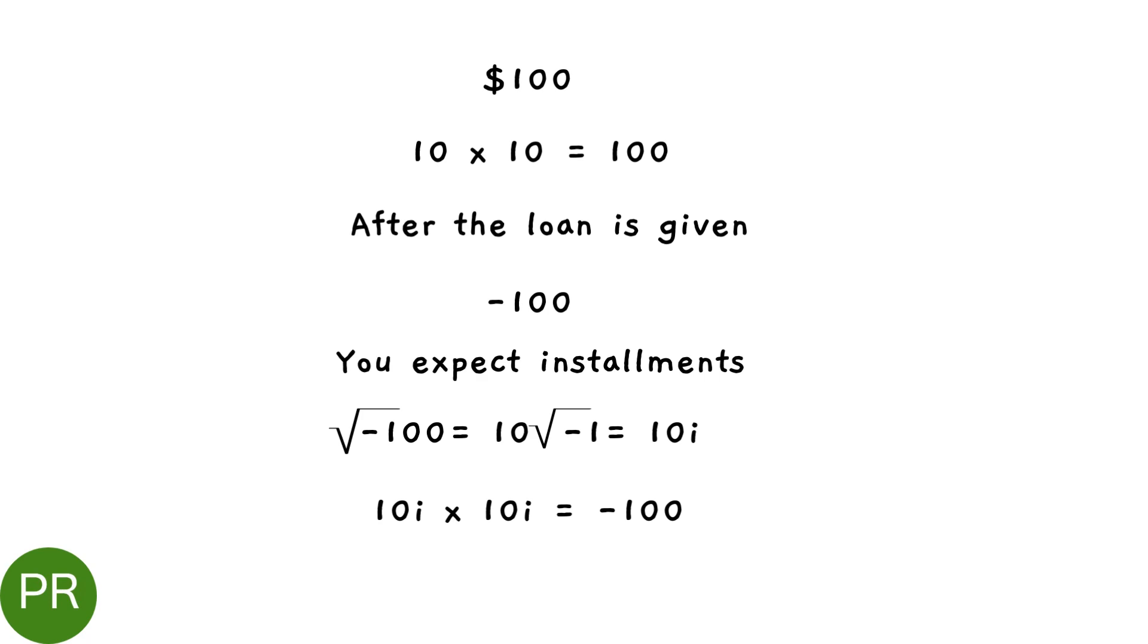After the loan is given, in your account books, you are short of $100 or minus 100. Now you expect installments. It's a loan.